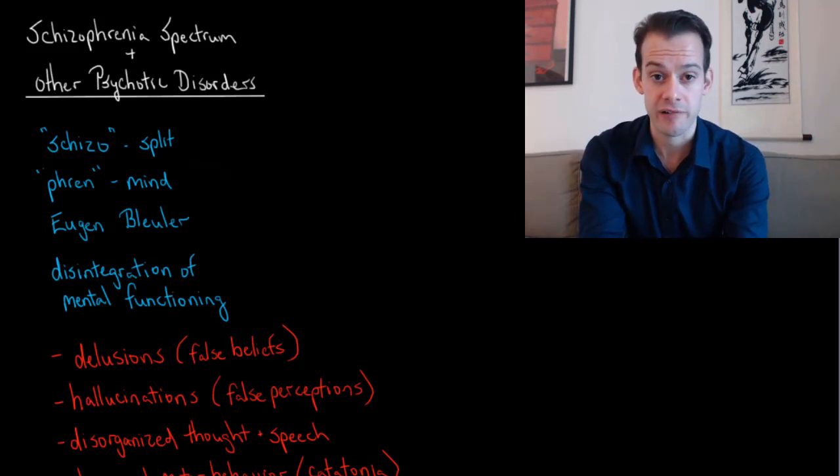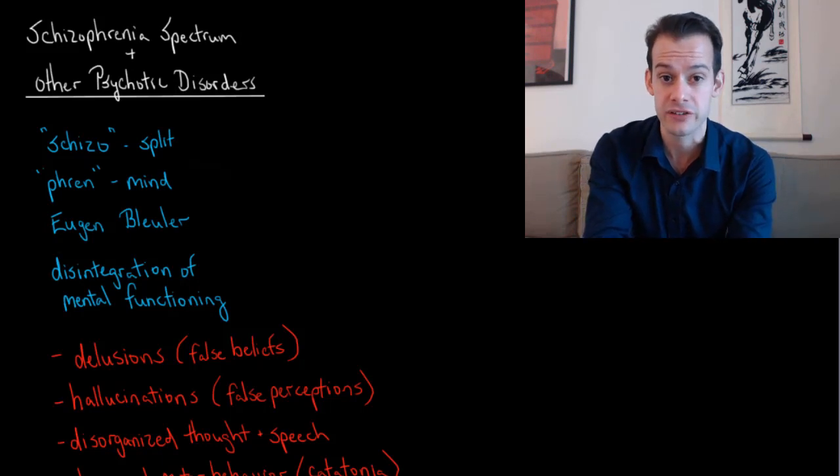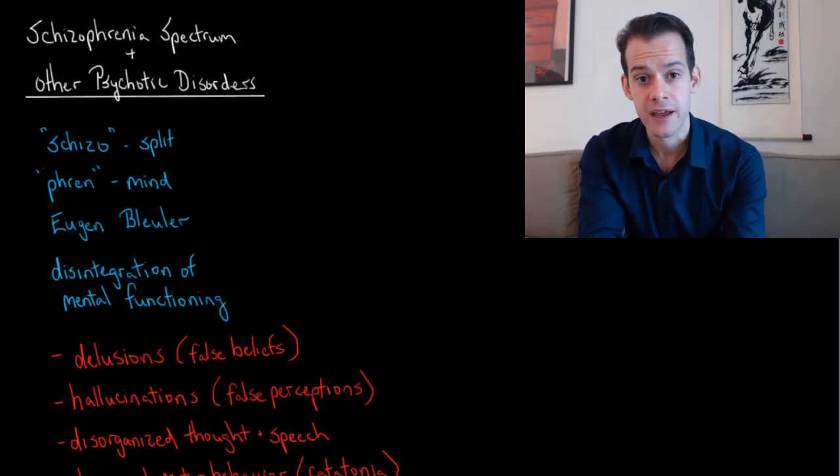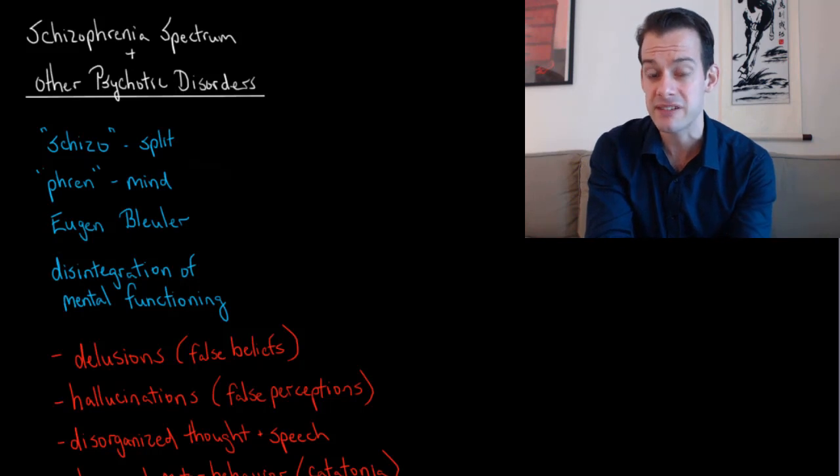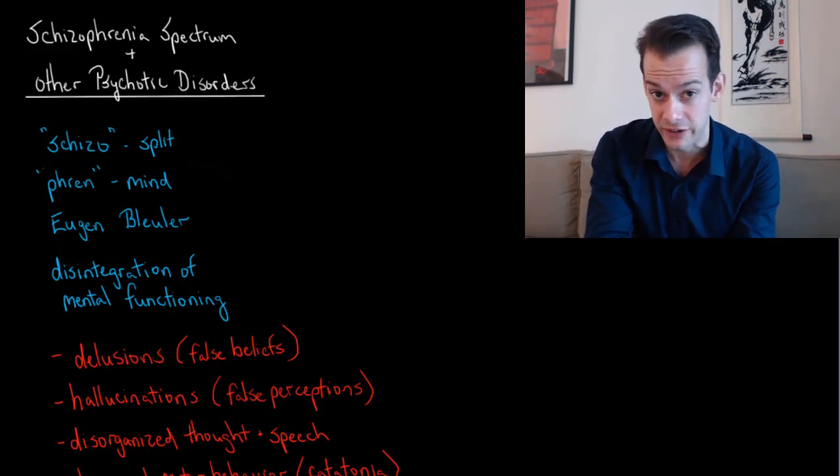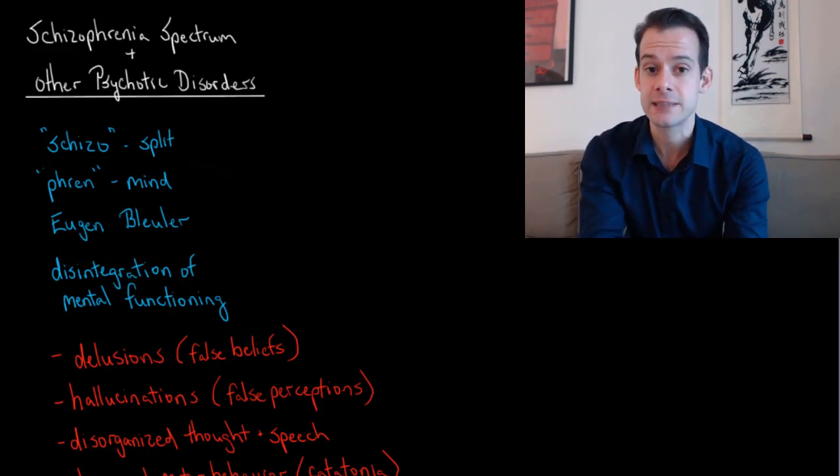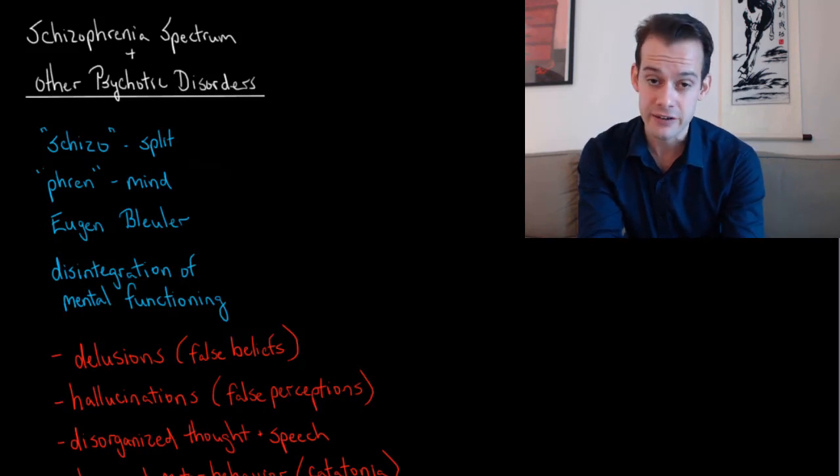The term schizophrenia comes from Greek schizo for split and fren or frenos for mind. This term was coined by the Swiss psychiatrist Paul Eugen Blöhler. Unfortunately it might be related to some misconceptions about what schizophrenia is because when people think of this splitting of the mind they might think of dissociative identity disorder, formerly known as multiple personality disorder.